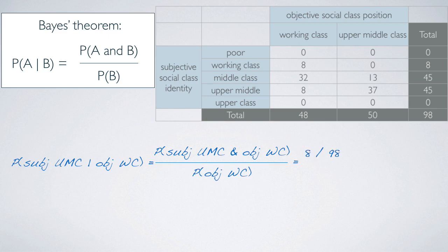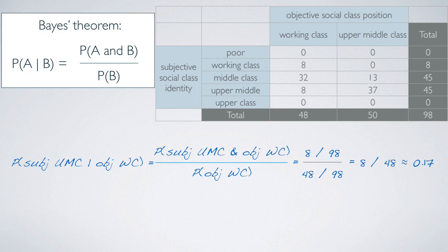The numerator is 8 out of 98 — 8 students out of 98 total meet both criteria — and the denominator is 48 out of 98, since 48 students are working class based on their objective categorization. This gets us to the same answer: 17%. Bayes' theorem is a bit of overkill here since we already arrived at this answer by reasoning through the table, but if we didn't have the counts neatly organized in a table, using Bayes' theorem to calculate a conditional probability would be much more intuitive.